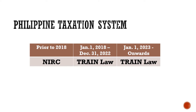Prior to the Train Law, ang pinafollow natin is yung National Internal Revenue Code — yun yung effective na tax law. So i-differentiate natin yung dalawa. Prior to 2018, ang tax law implemented is the National Internal Revenue Code. Starting from January 2018, nagtook effect yung Train Law. Yung first tranche ng Train Law will take effect January 2018 to December 31, 2022. And merong second tranche ang Train Law which will take effect on January 1, 2023 onwards.